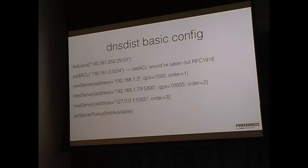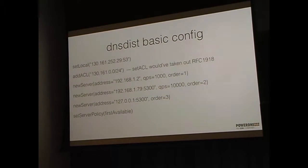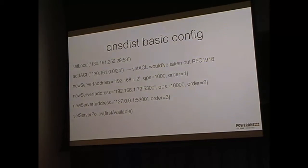The second simplest config says: listen on that IP address, add this access control list — note that adding an ACL adds to the default ACL, while set ACL removes the old one — and these are my three downstream servers. The first server can handle 1,000 queries per second, the second 10,000, and the third gets the rest. We set the policy to 'first available.' With 11,000 queries per second, the first server gets 1,000, the second gets 10,000, and the third gets no traffic — but as long as you have fewer than 1,000 QPS everything concentrates on the first server, giving you up to 98% cache hit ratios.